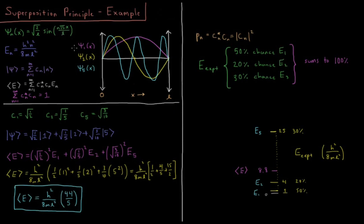The first eigenfunction of the Hamiltonian Hψ = Eψ, ψ₁(x), is a half sine wave starting at zero and finishing at L. The second eigenfunction is a full sine wave from zero to L. Skipping up to the fifth eigenfunction, ψ₅(x), which is two and a half sine waves — five half sine waves going from zero to L. The energy of each individual state is h²n²/8mL², where h is Planck's constant and m is the mass of the particle.